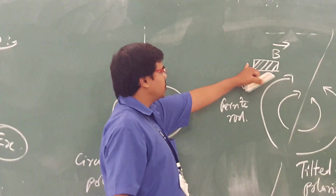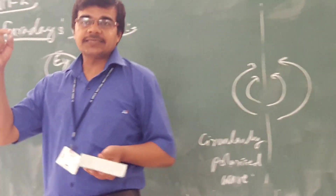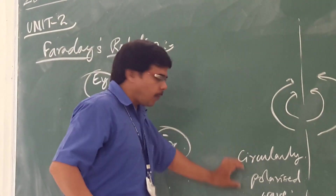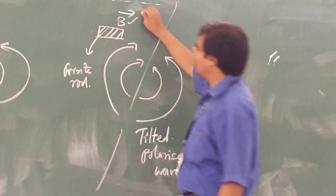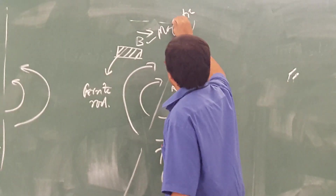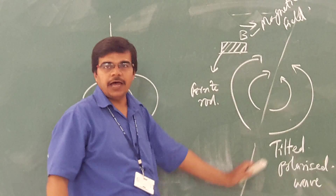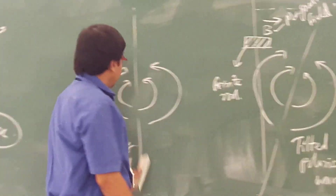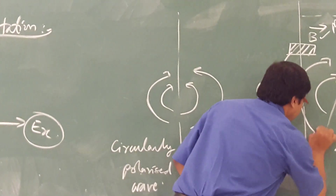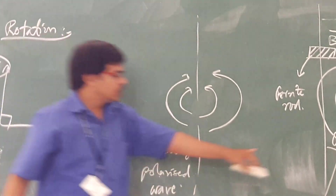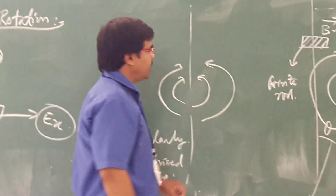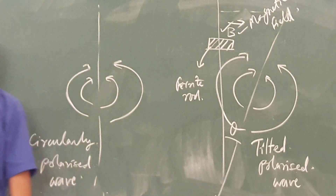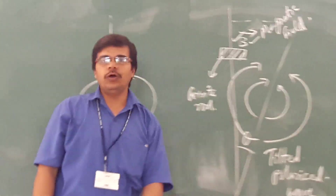If you have a circularly polarized wave and you pass it through a ferrite rod with a magnetic field, you will observe a tilt in the axis. This tilt, which is the angle of rotation, depends upon the strength of the magnetic field — the more the strength, the more the tilt — and it also depends upon the dimensions of your ferrite rod.